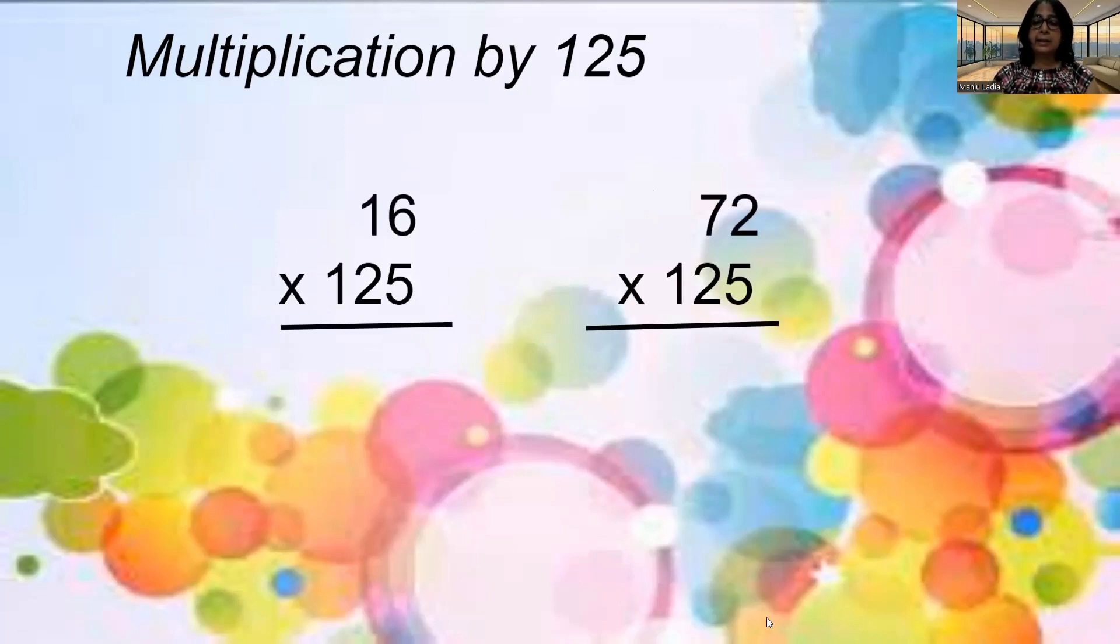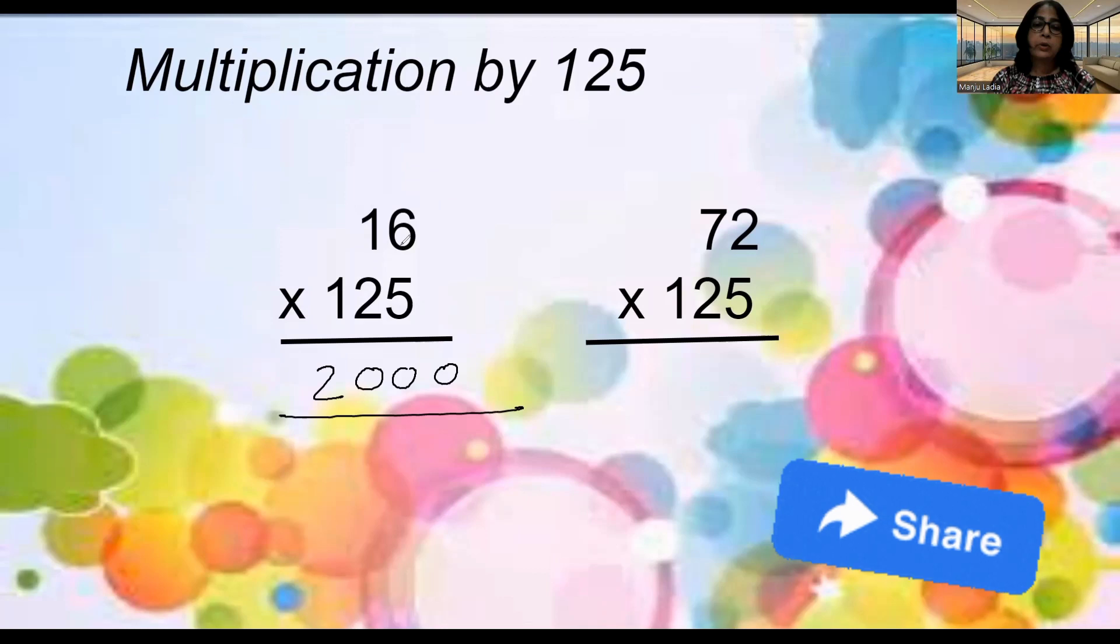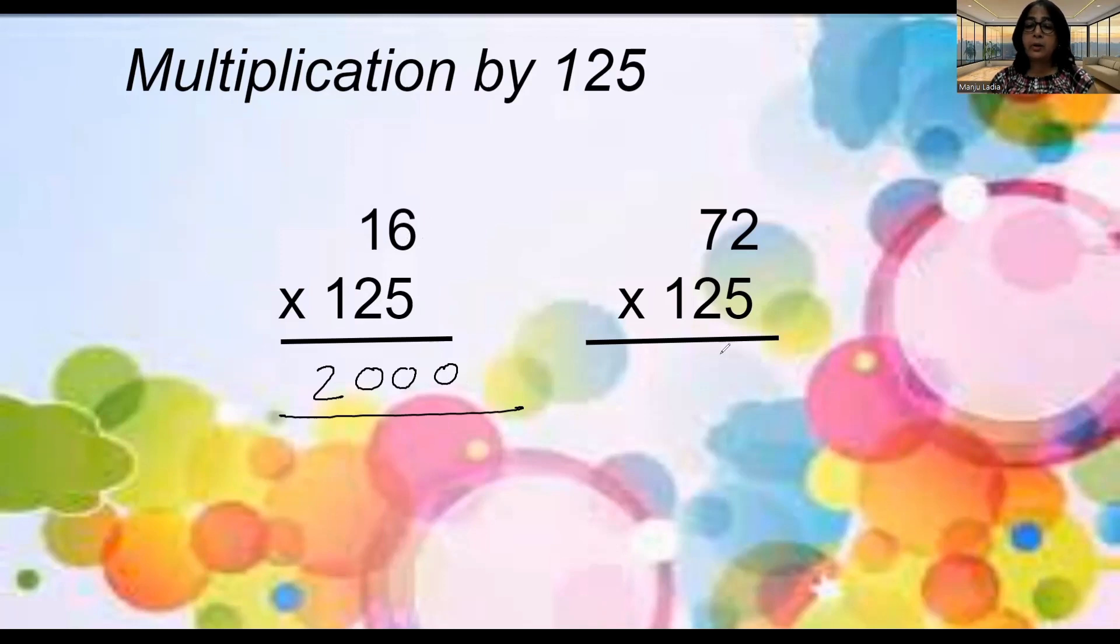It is 16, and 16 multiplied by 125. Let's see how easy it is. So, 16 divided by 8 is 2. 16 divided by 8 is 2. Add three 0's. So the answer is 2000 only. If you will multiply 125 by 16, you will find 2000. In a finger, in your mind, you can calculate.